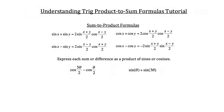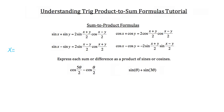For this first problem, we have a cosine function minus another cosine function, so we're going to use this sum to product formula for cosine minus cosine. You may also notice that x is going to be equal to five theta over two, and y is going to be equal to theta over two. So x equals five theta over two and y equals theta over two.